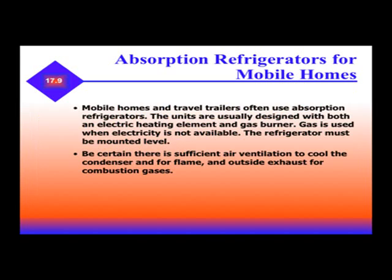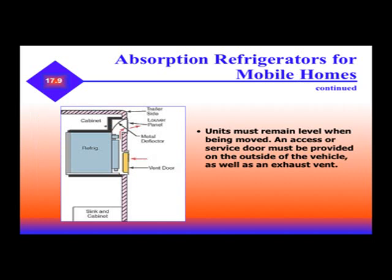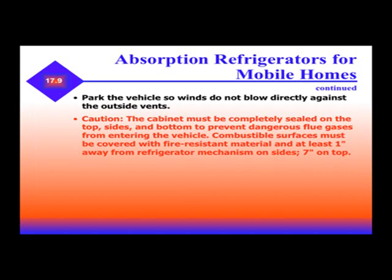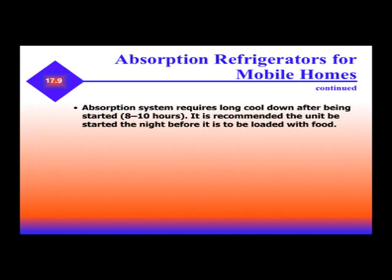Mobile homes and travel trailers use absorption refrigerators. These units are usually designed to use both electric heating and gas. Gas is used when electricity is not available, and the refrigerator must be mounted level. The ones in mobile homes must remain level when being moved. An access service door must be provided on the outside of the vehicle as well as an exhaust vent. Park the vehicle so winds do not blow directly against the outside vents. The cabinet must be continuously sealed on the top, sides, and bottom to prevent dangerous flue gases from entering the vehicle. Absorption systems require long cool-down periods after being started — 8 to 10 hours — and it is recommended the unit be started the night before it is loaded with food.